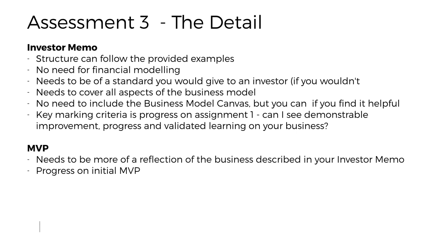You don't have to include the business model canvas if you don't want to, but if you found it useful you can. One of my key marking criteria is progress on Assignment 1 — can I see a demonstrable improvement and progress of validated learning on your business? Validated learning going back to the lean startup methodology we covered at the start of the semester. When I look at what you produced for Assignment 1, the progress on your MVP, and the learnings from your MVP — how much progress have you made from point A to point B?